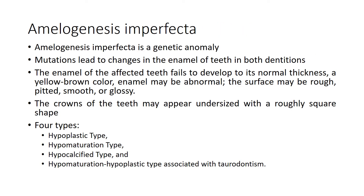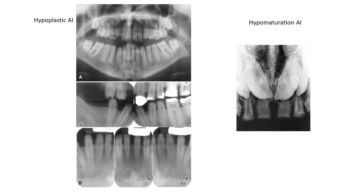Amelogenesis imperfecta is a genetic anomaly where mutations lead to changes in the enamel of teeth in both dentitions. The enamel fails to develop to its normal thickness, a yellow-brown color is seen, and the surface may be rough, pitted, smooth, or glossy. The crowns may appear undersized with a rough square shape. There are four types: hypoplastic, hypomaturation, hypocalcified, and hypomaturation-hypoplastic type which is generally associated with taurodontism. The hypoplastic type shows a squarish shape of the teeth with virtually no enamel visible, while the hypomaturation type has really wide pulp chambers giving rise to reduced opacity in the enamel area.